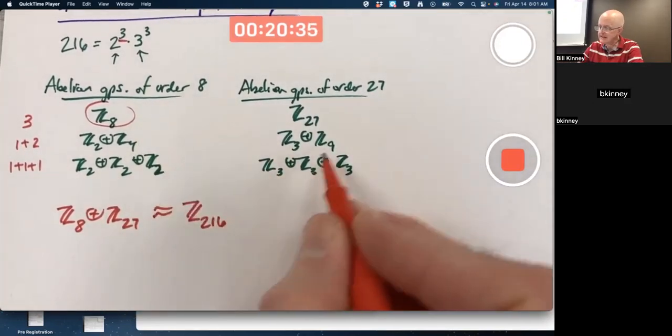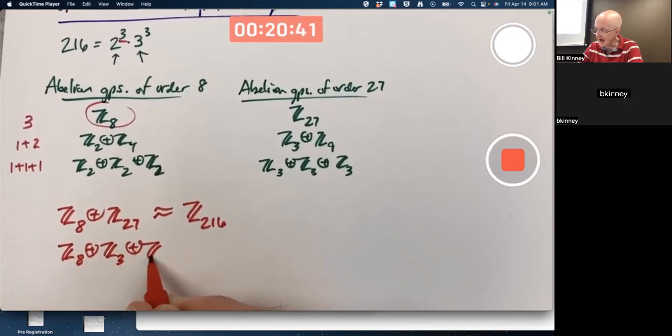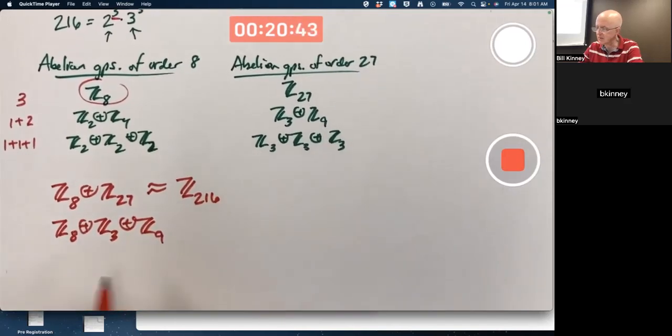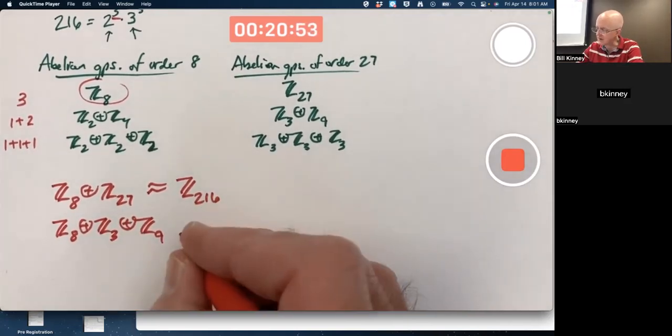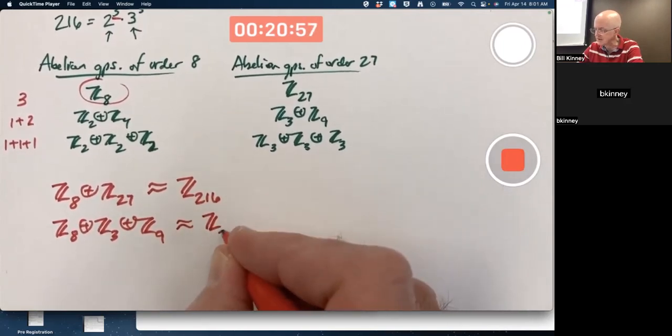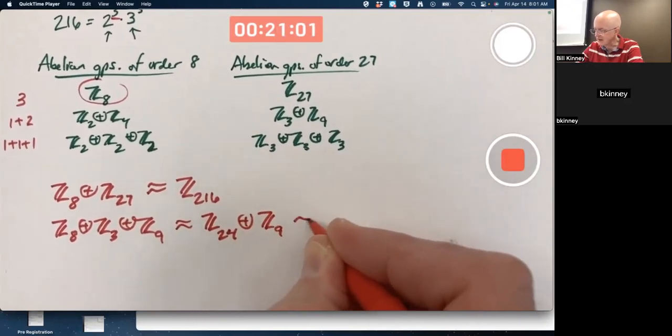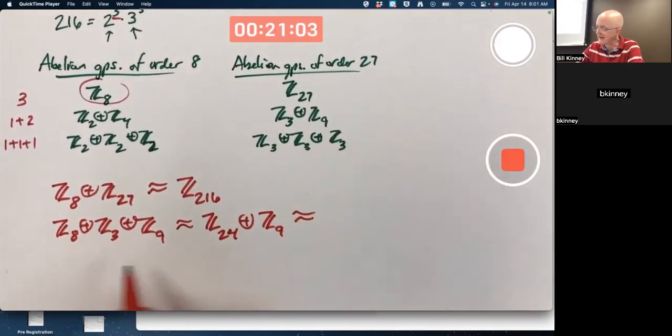We can do Z₈ with Z₃ and Z₉ like this. Do you have to combine these in a certain way, like combine the 8 and the 3 or the 8 and the 9? No, you don't have to. You could leave the answer for this possibility like this, but it's good to realize that you also can say that's isomorphic to, for example, 8 times 3 is 24. It's also isomorphic to, if I multiply the 8 and the 9, Z₇₂ with Z₃.